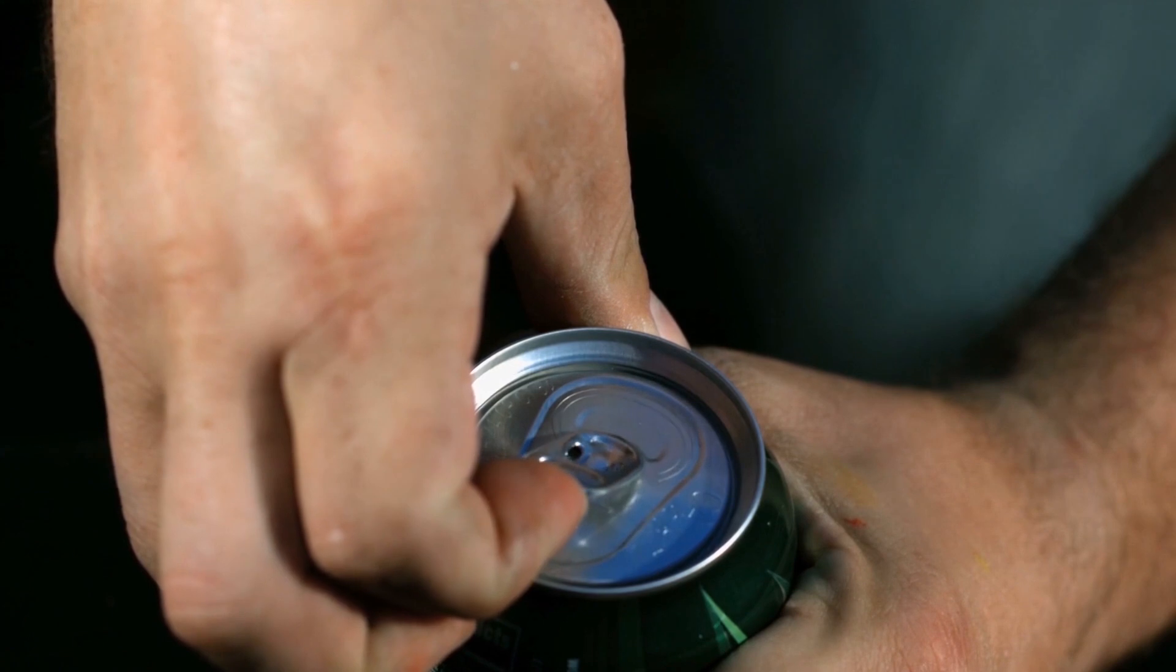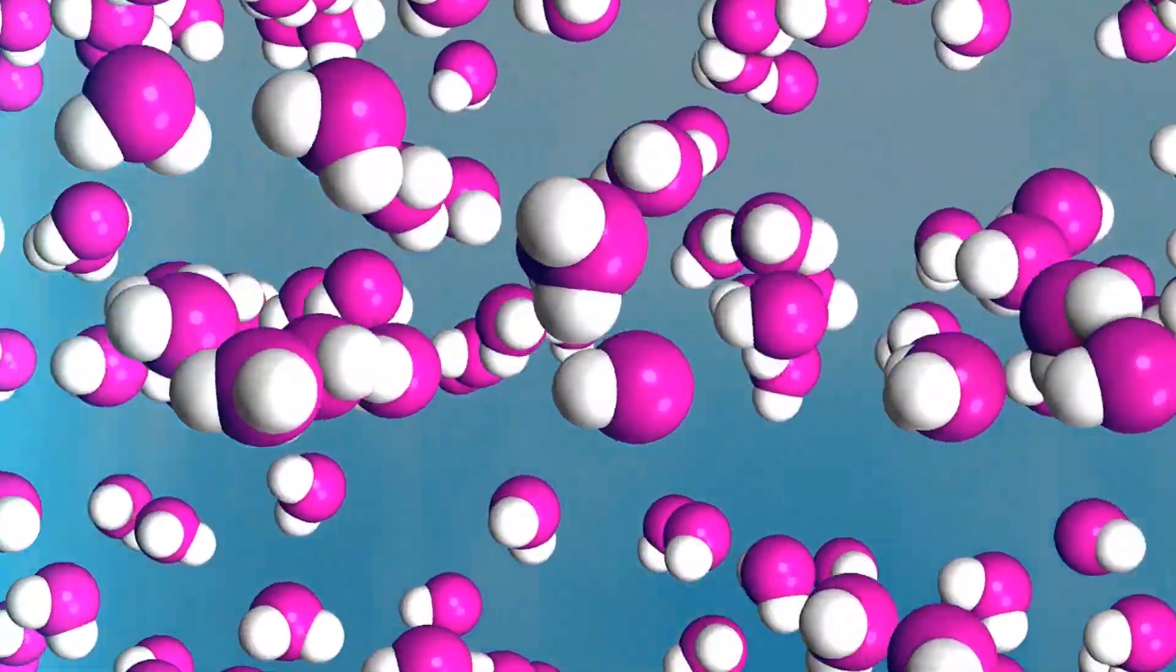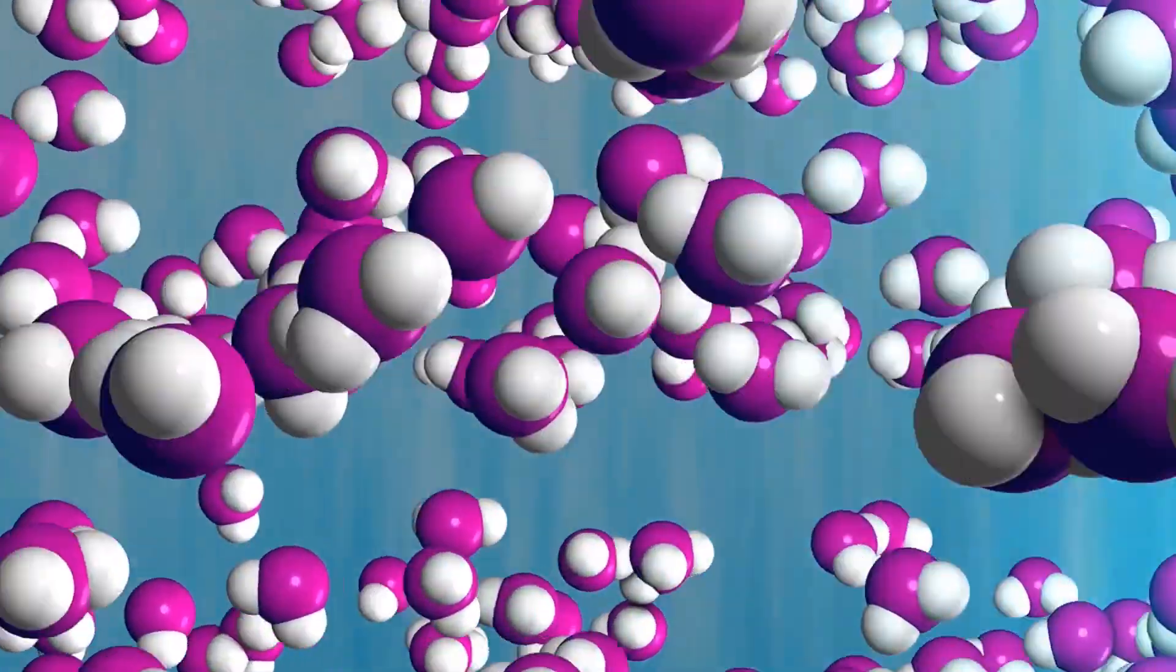Another reason carbon dioxide is important in the Earth's system is that it dissolves into the ocean, like the fizz in a can of soda. It reacts with water molecules, producing carbonic acid and lowering the ocean's pH. Since the start of the Industrial Revolution, the pH of the ocean's surface waters has dropped from 8.21 to 8.10. This drop in pH is called ocean acidification.